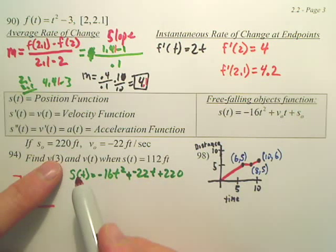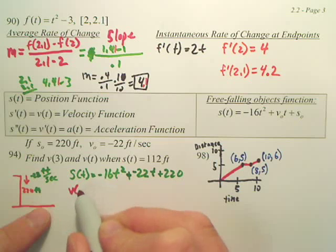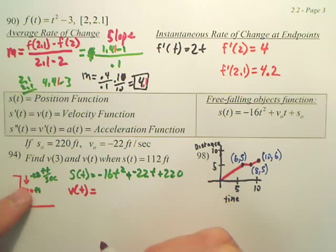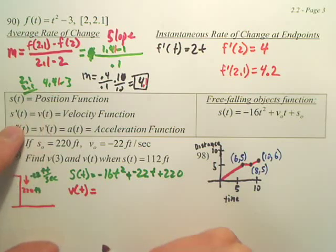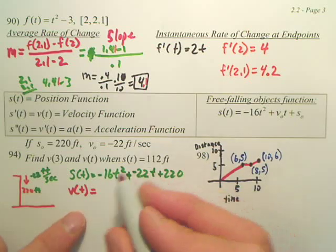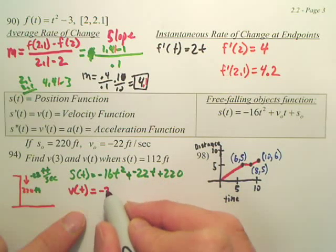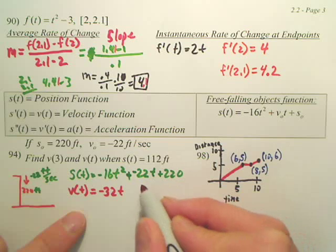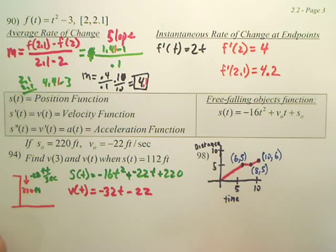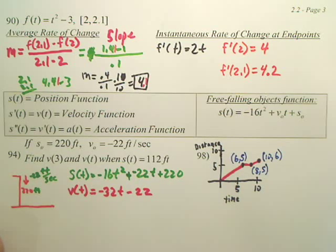Now, I want to know the velocity at three. So don't I need to find my velocity function? How do you find your velocity function? Well, what's it say here? Velocity is the derivative of position. So can I derive this upper function? Negative 32t minus 22. Correct? That's my velocity function.